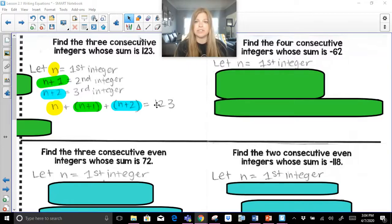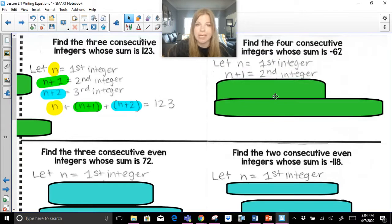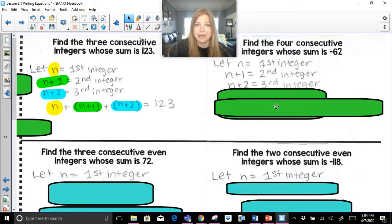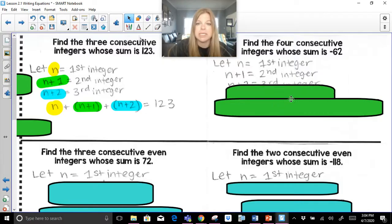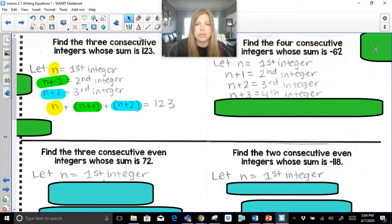So let's set up the next one. Find the four consecutive integers whose sum is negative 62. So now I think four of them. n is going to stand for the first integer. n plus 1 is the second. n plus 2 is the third.